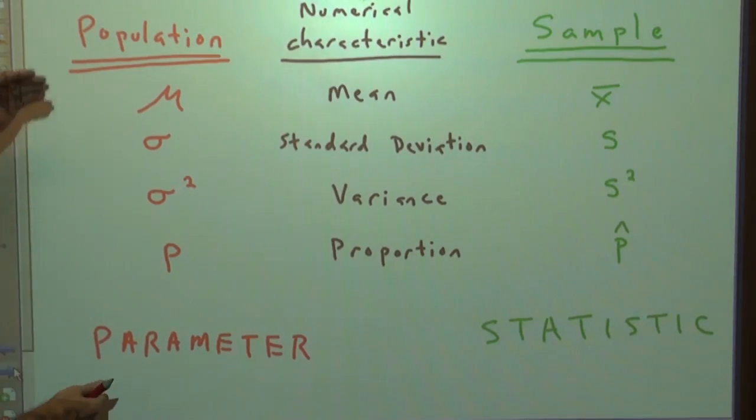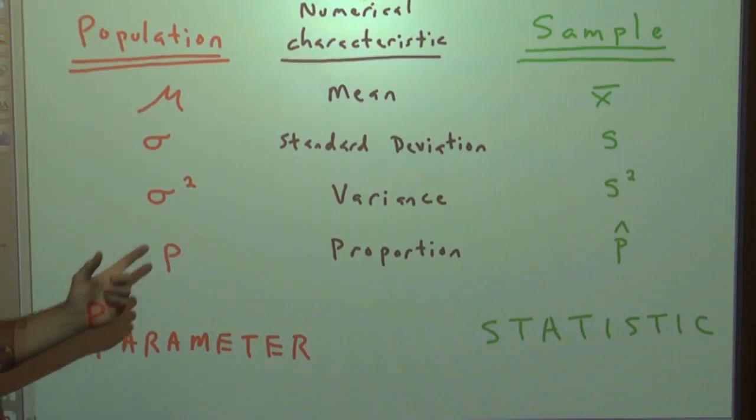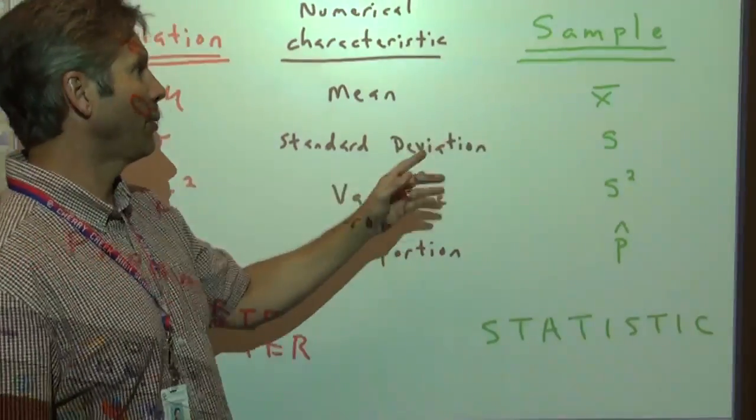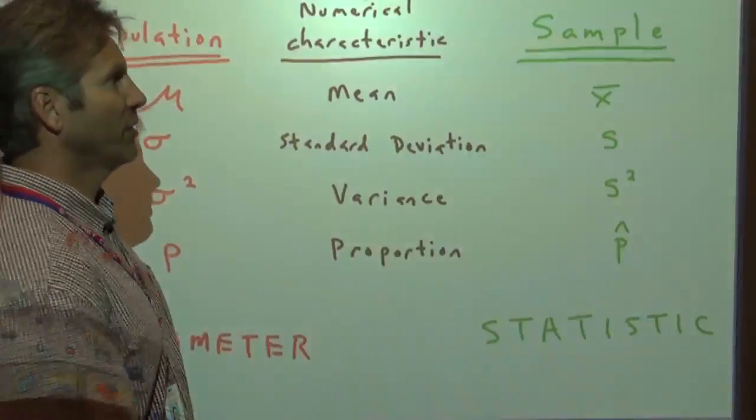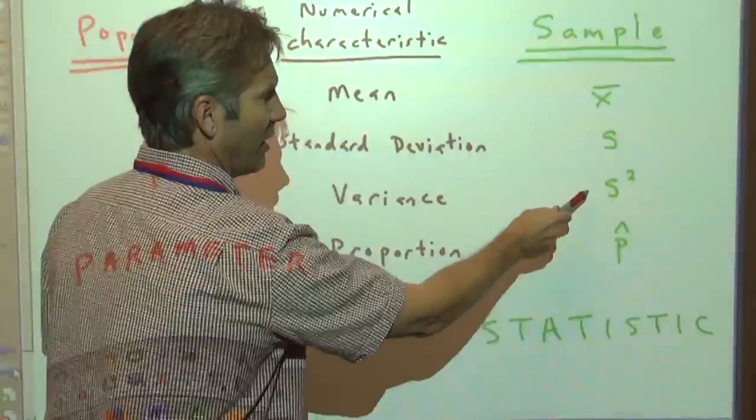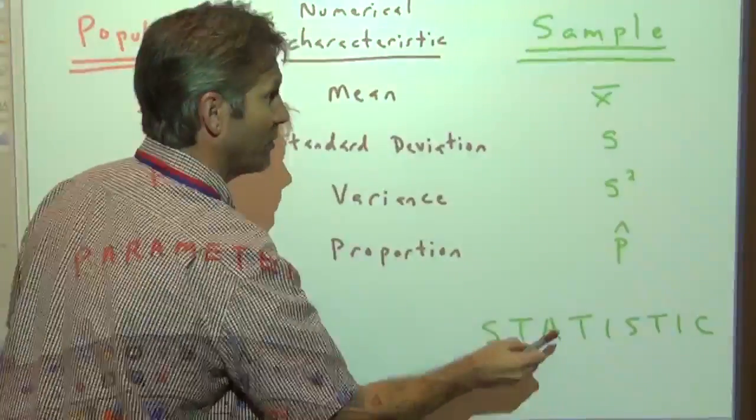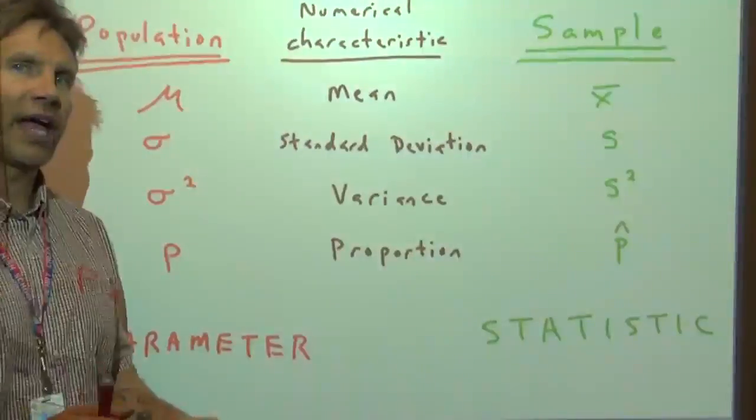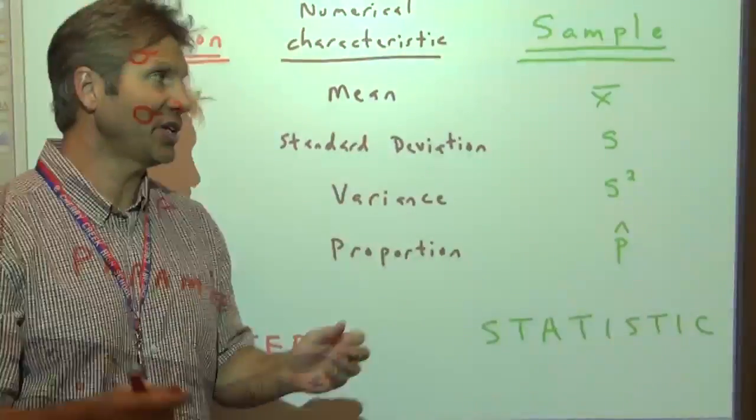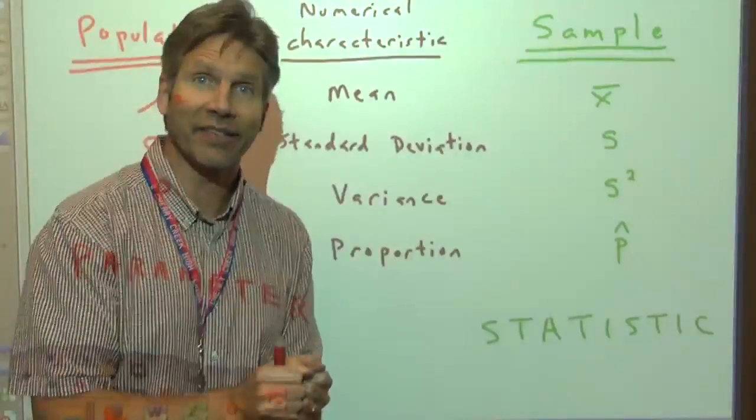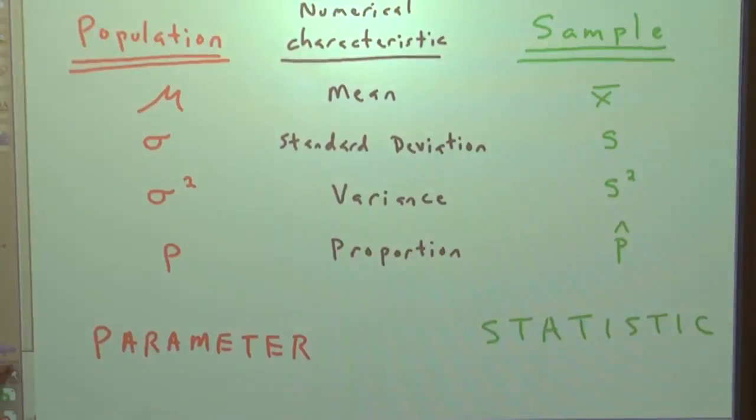But over here, if it came from a sample, then these numerical characteristics are sample means, sample standard deviation, sample variance, and sample proportion, they are statistics because they came from a sample. We haven't looked at an entire population. We didn't take a census of the entire population. It's sample that, statistics.